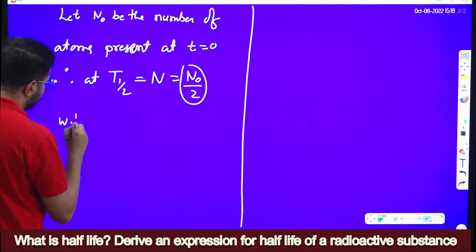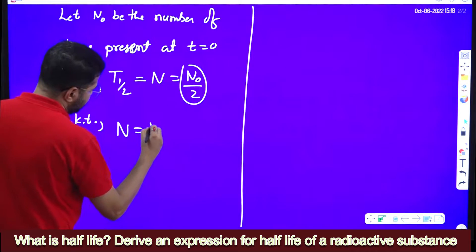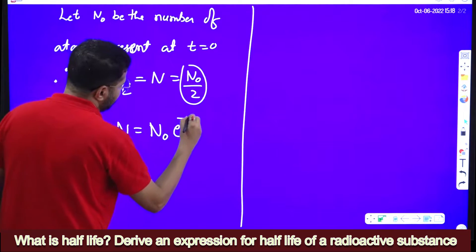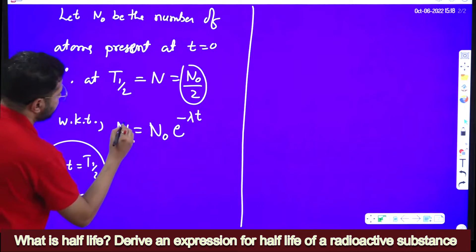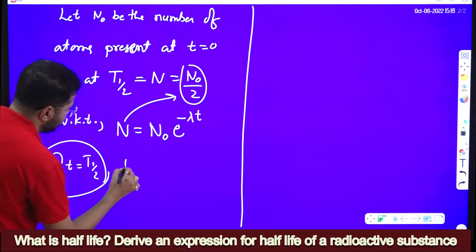Now we know that from radioactive decay law, we know that N is equal to N naught into e to the power minus lambda t. Now at t is equal to t half, at half-life, what do you mean by N? N is equal to N naught by 2.